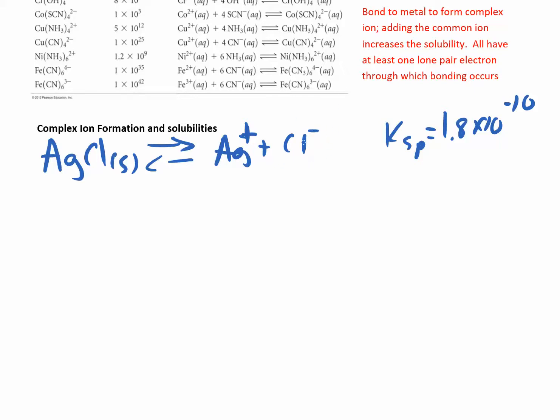Changing the pH on silver chloride doesn't help, because H+ and Cl⁻ would form HCl — a strong acid — so they'd rather stay apart. Instead, we work on the silver ion. If we can remove Ag+ from solution, we shift the reaction forward — removing a product forces the system to replace it, increasing dissolution.